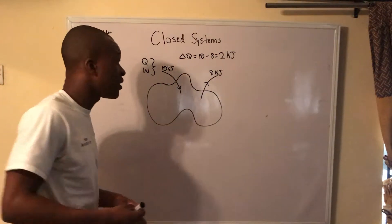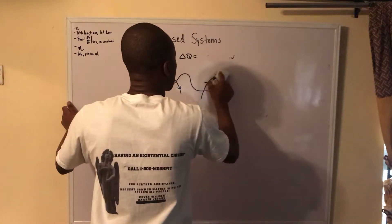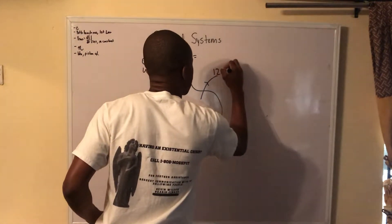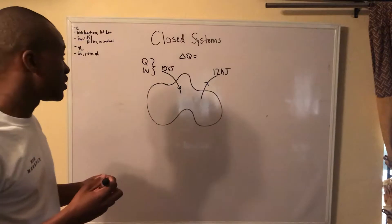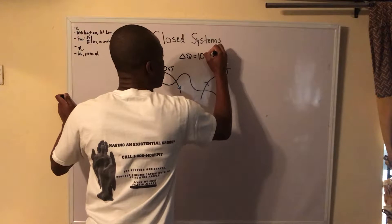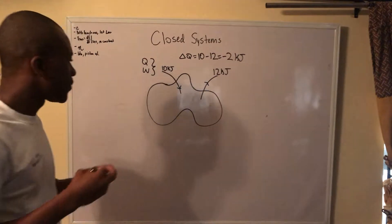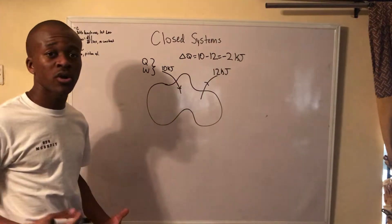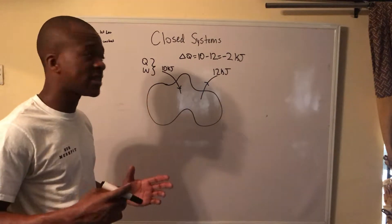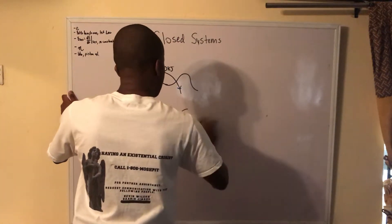However, what if 12 kilojoules left the system? We have 10 going in but 12 leaving, so we end up with negative 2 kilojoules. These signs are very important because they denote the direction things are going, so it's very important to take that into account.